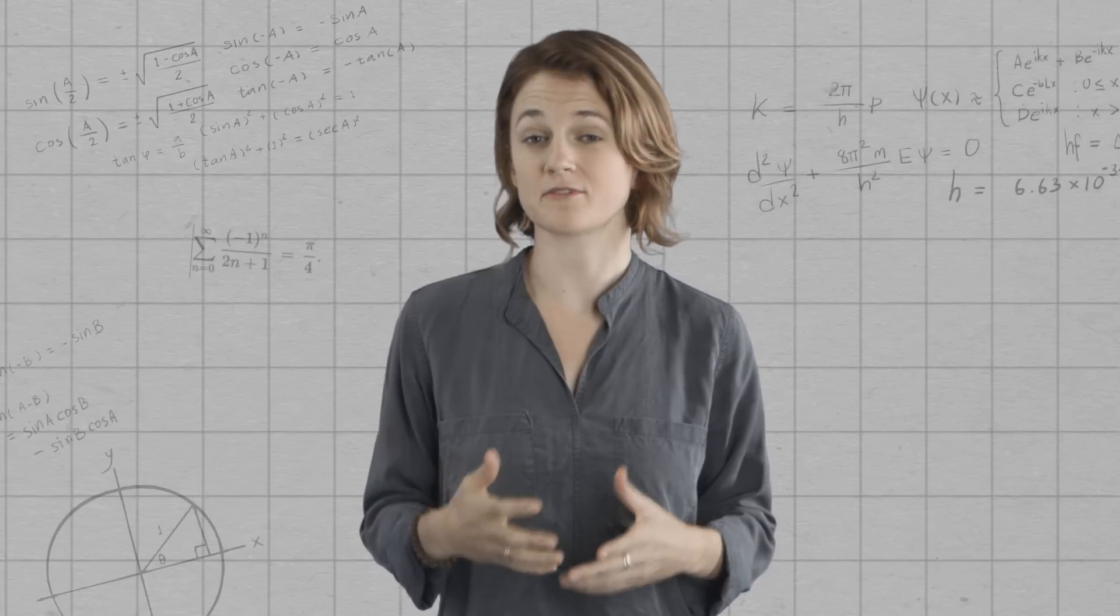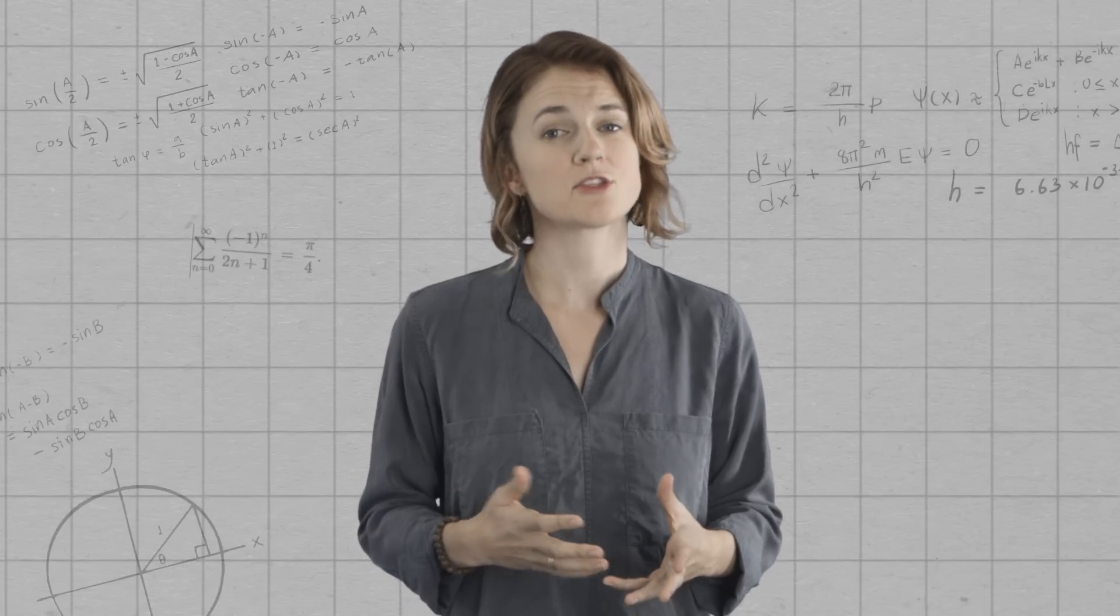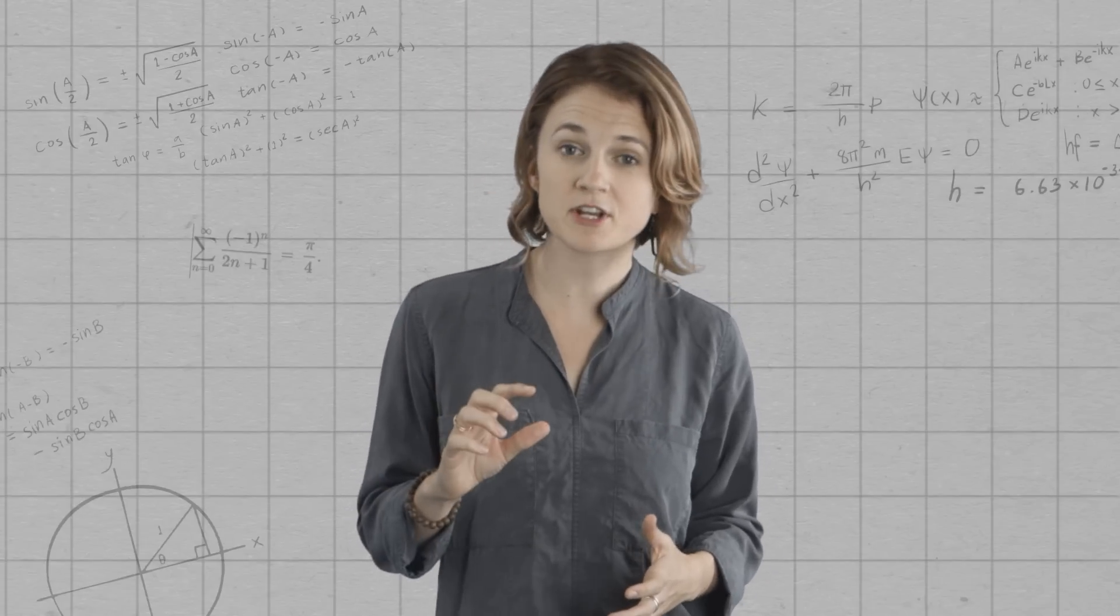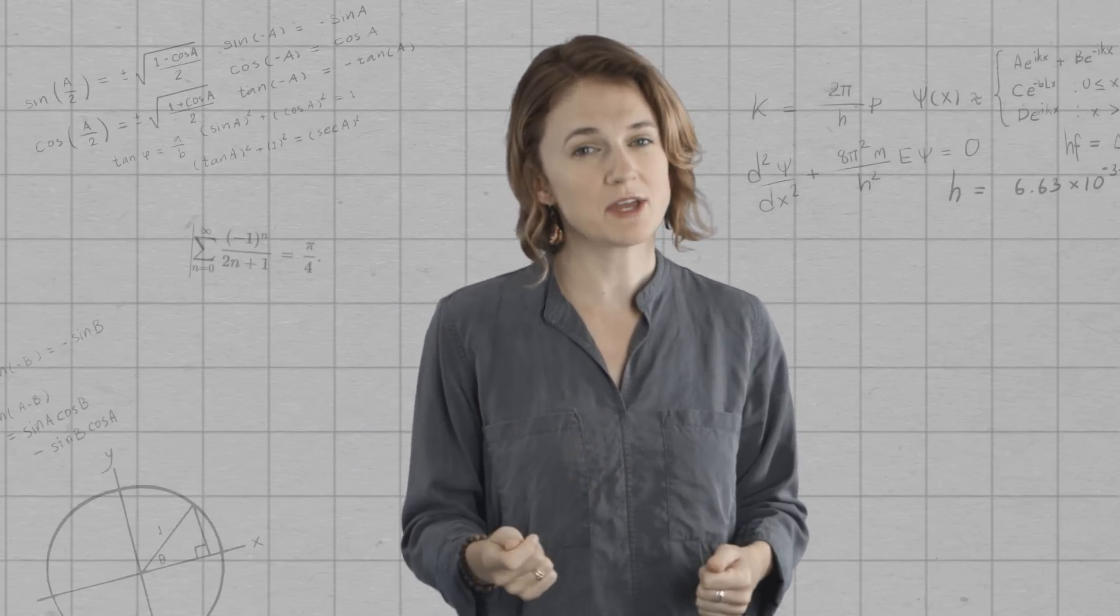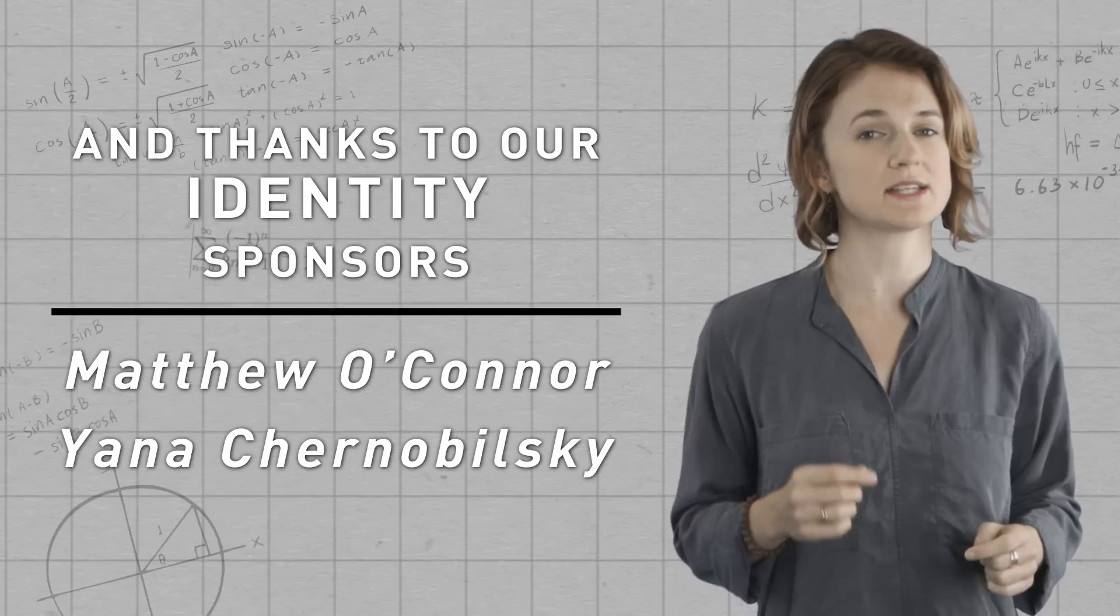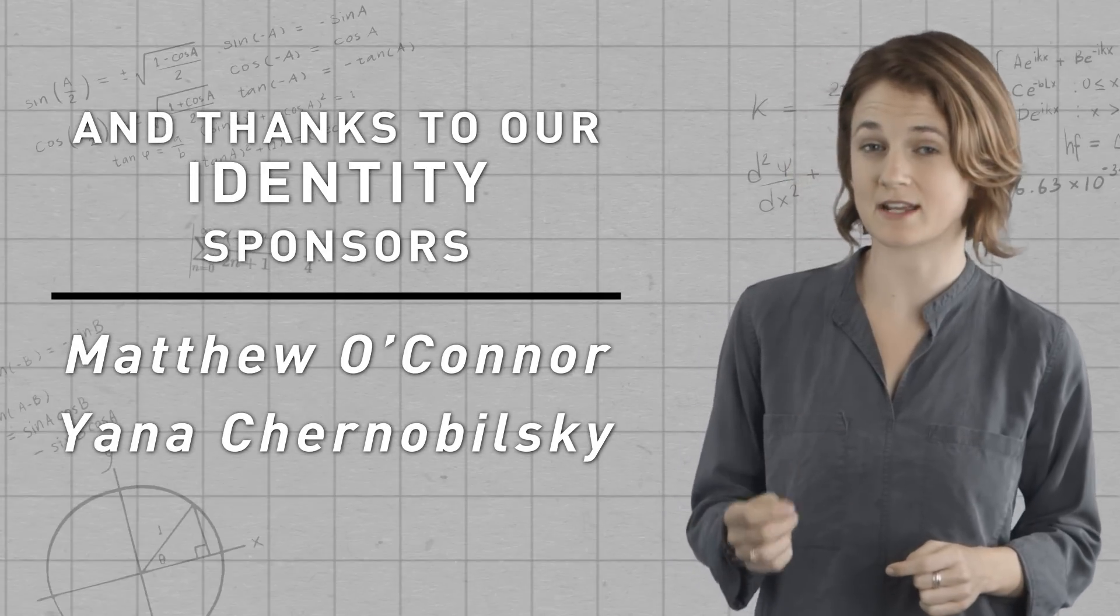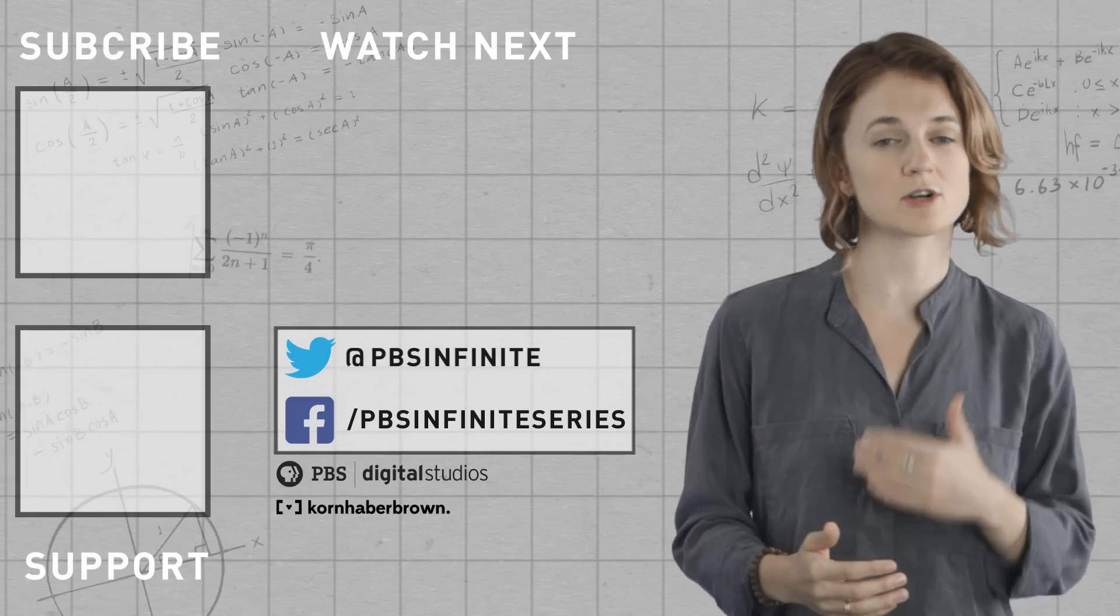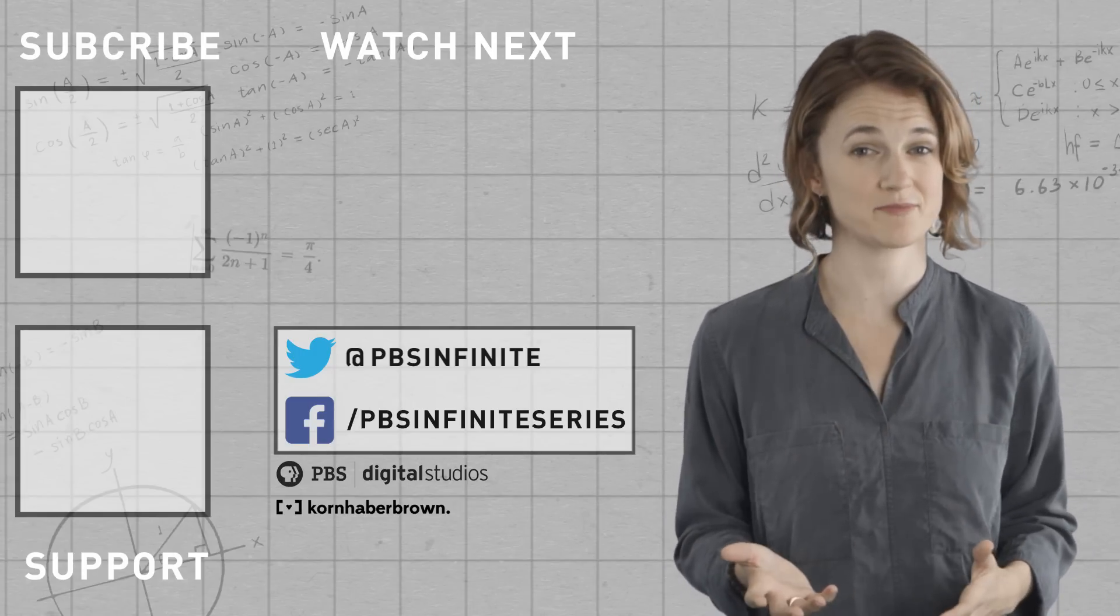Well, after adding it to itself a thousand times, you get one. After adding it to itself ten thousand times, you get ten. The result just keeps getting bigger and bigger and is unbounded. The tinier the number, the longer it takes to get big, but it will eventually get arbitrarily large. In fact, the only way to add infinitely many numbers together and get a finite number is if the numbers are getting smaller and smaller, like one-half plus one-quarter plus one-eighth plus one-sixteenth and so on.